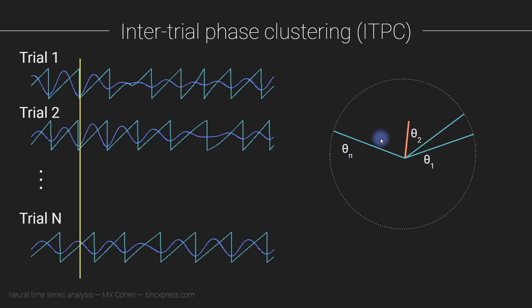This is the way we compute inter-trial phase clustering. Here we are looking at the consistency of the phase angle time series over different trials at the same time point, all coming from one electrode. What we do is take the phase angle from each time point, create these unit vectors where the angles are defined by these angles here, compute the average, and then take the length of that average.